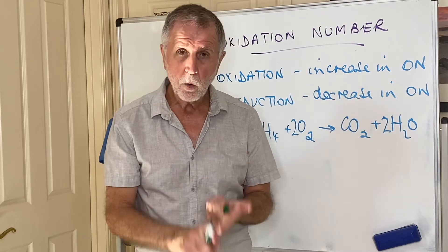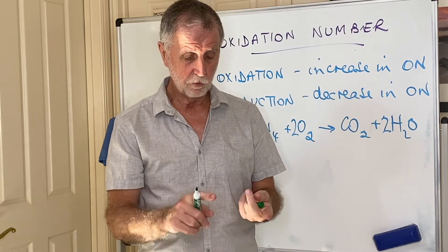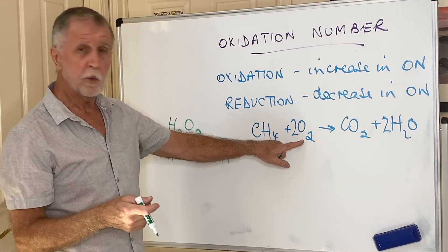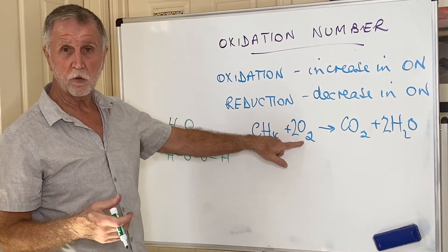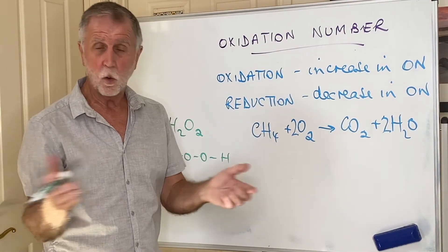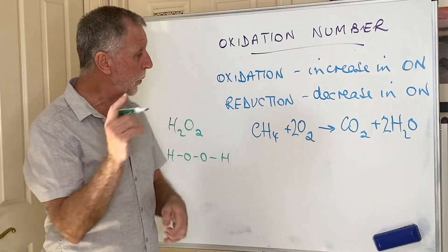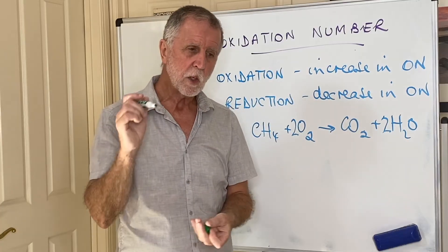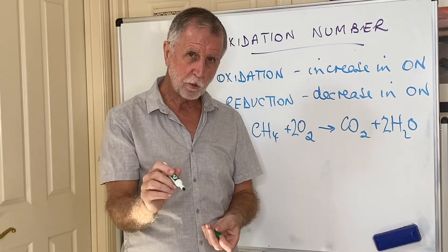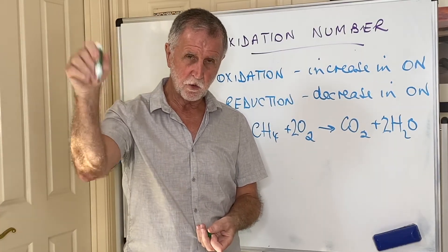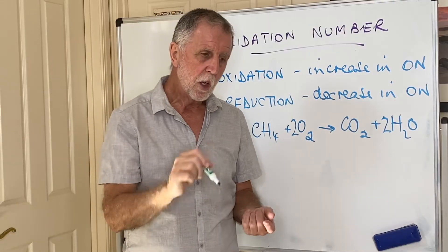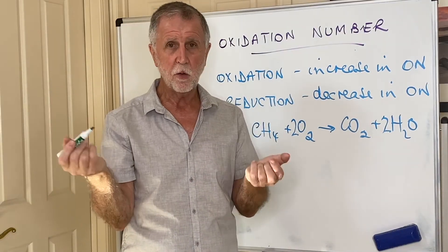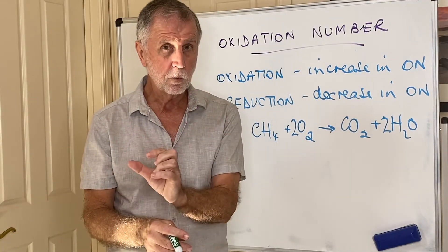Group one metals are always +1 in their compounds, not obviously the elements. By the way, elements before they've lost or gained electrons are clearly going to be zero. All elements will be zero. But once they gain or lose electrons, they have an oxidation number. Group one elements are always +1: sodium, potassium, lithium, rubidium, cesium. Group two elements—magnesium, calcium, strontium, barium—those are always +2. No exceptions.